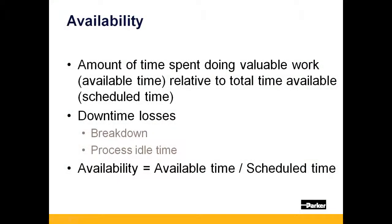Availability is the ratio between the theoretical available time relative to the scheduled time to operate, often called uptime. A reduction in available time indicates a downtime loss. Downtime losses can be attributed to the result of a breakdown, or can come from process idle time while an operator waits for parts or takes longer than normal to set up the machine.